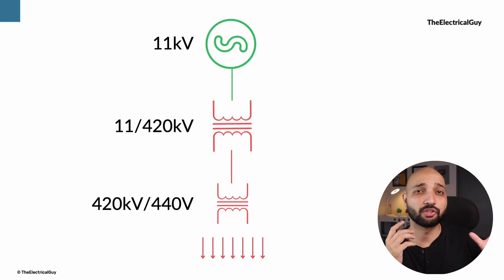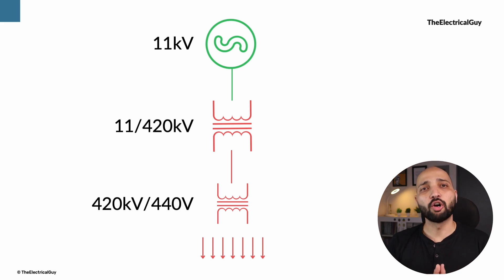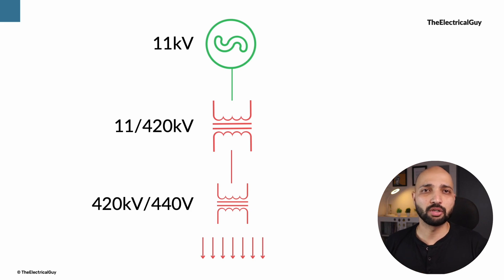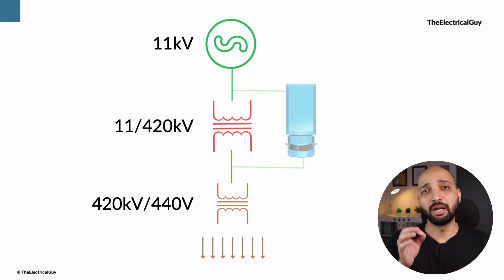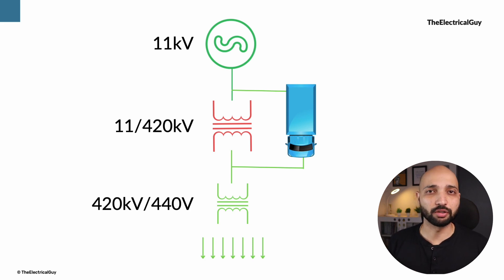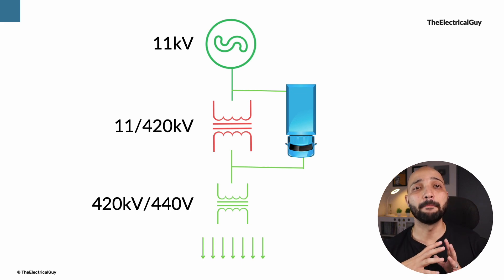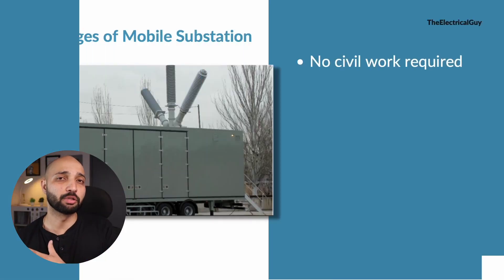Going back to our example where the step-up substation went off for maintenance lasting around two months — instead of keeping the supply off and incurring losses, I can get a mobile substation, bypass the substation under maintenance, give supply via the mobile substation, and continue with the supply. In this way I am not having losses — my main substation is under maintenance but supply continuity is maintained and I am still earning tariff charges.